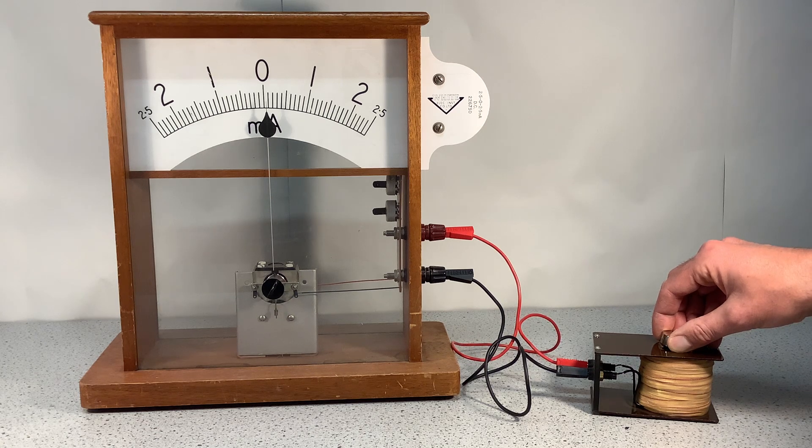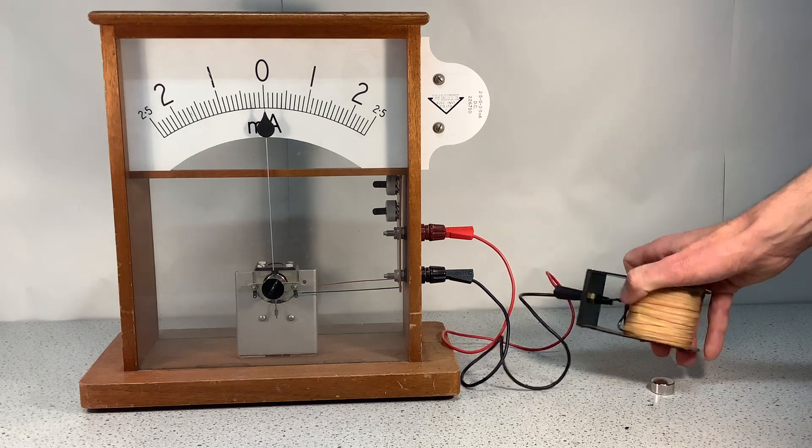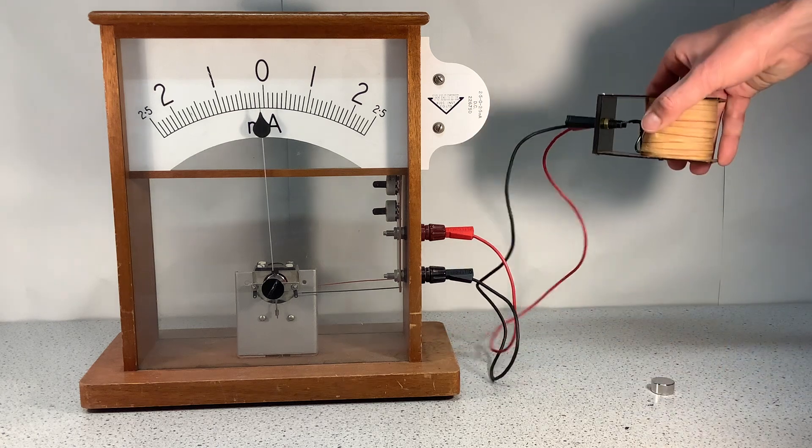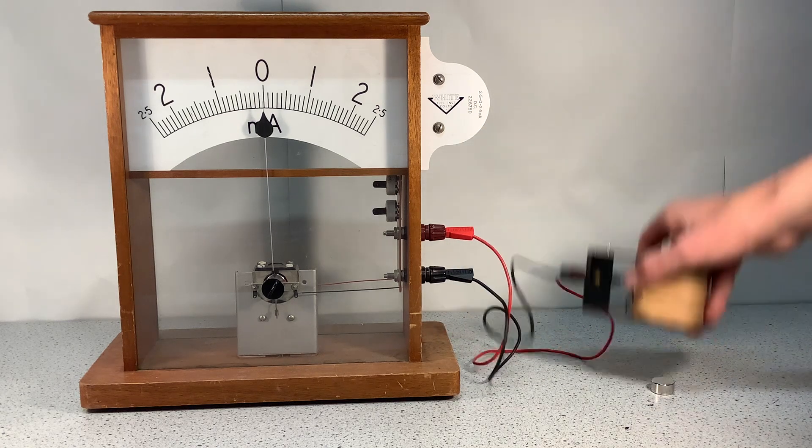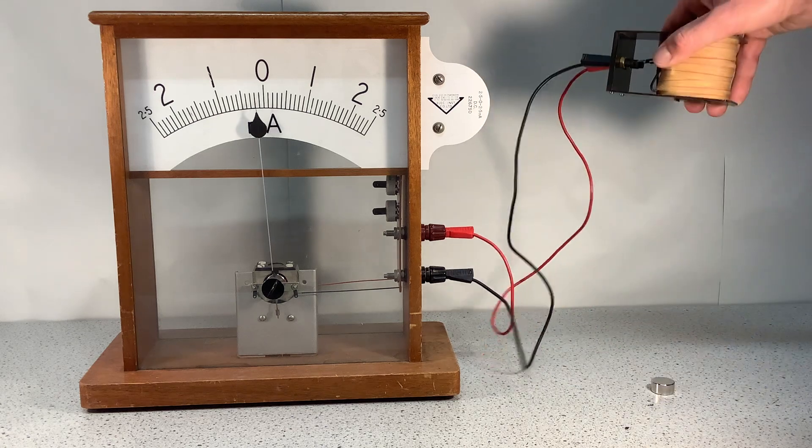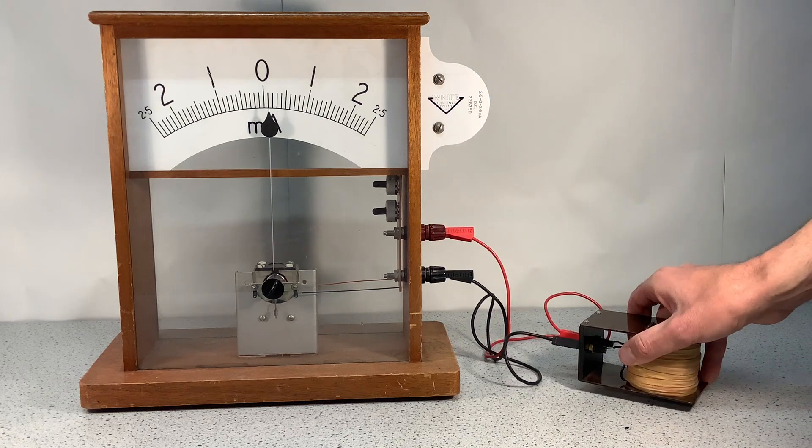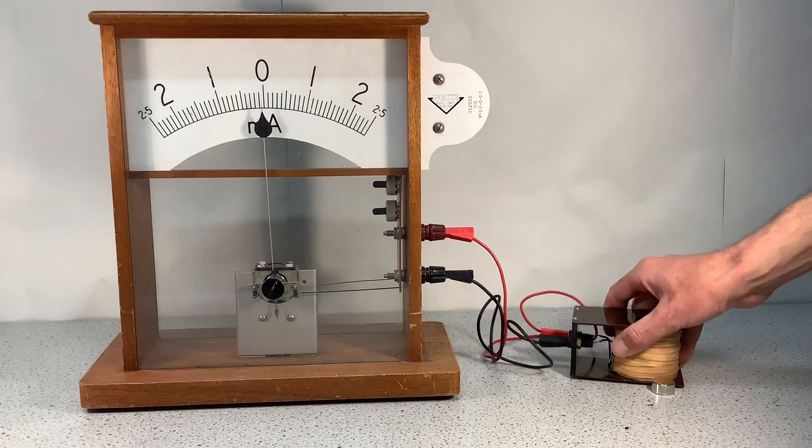And the next thing that I can try and do is leave the magnet still and move the coil, and you'll notice that once again potential difference is induced which makes a current flow. So it's the relative movement of the magnet and the coil that matters.